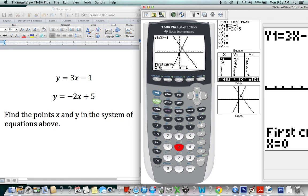When it says first curve, it will be on one of the lines, so just press enter. Now it jumps to the second curve, which is the second line. Press enter once again. When it says guess, we want to get in as close as we possibly can to the intersection point and then press enter. It tells us our point of intersection.